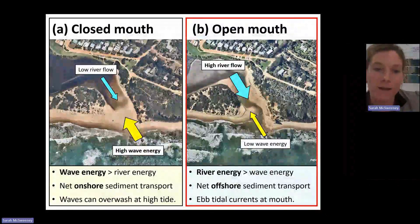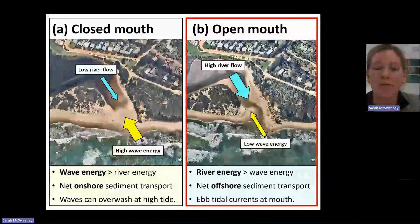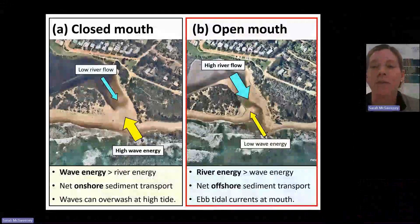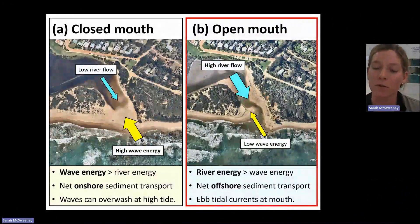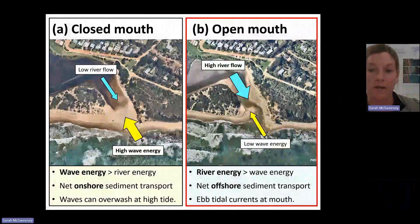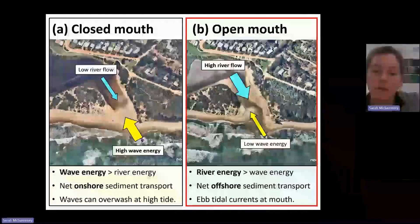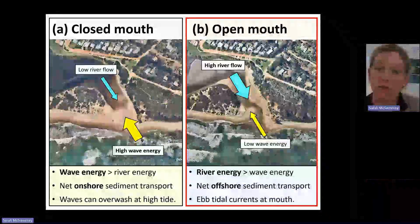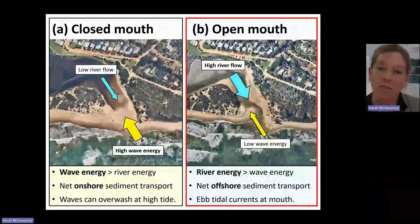When we look at the open state, the tables are kind of turned. We have periods of high river flow, and that flow has enough energy that it can beat the waves that are depositing sediment. The flow punches through the sandbar and the estuary becomes open. That usually happens when we have high rainfall in the catchment and runoff, and then the lagoon overtops the berm.